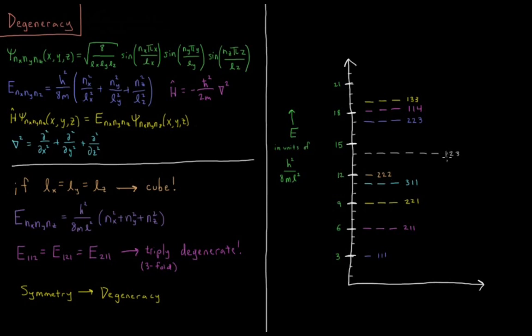Then we get a six-fold degeneracy of 1-2-3. All permutations of 1-2-3 are of equal energy. So 1-2-3, 1-3-2, 2-1-3, 2-3-1, 3-1-2, and 3-2-1. All of those being a six-fold degenerate state at e is 14 h squared over 8 mL squared.